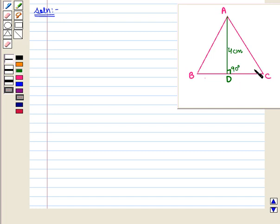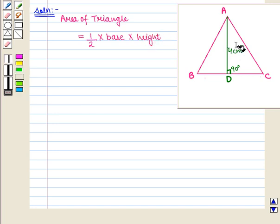Now we have to find its area. We know that area of triangle is equal to 1 by 2 into base into height. Here we know the height and now we have to find its base. So first we find its base and then its area.